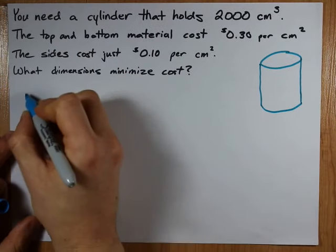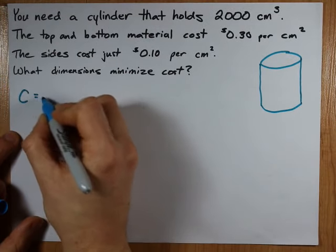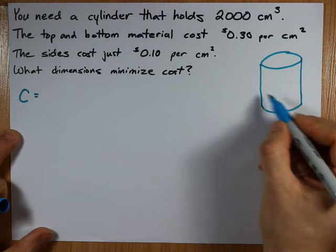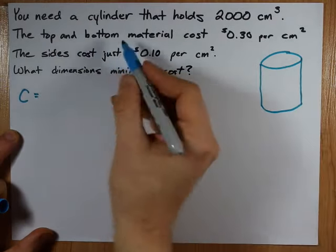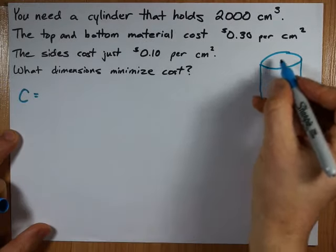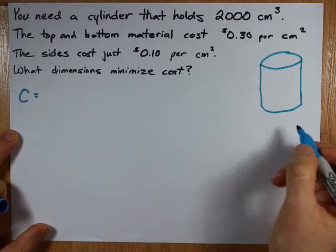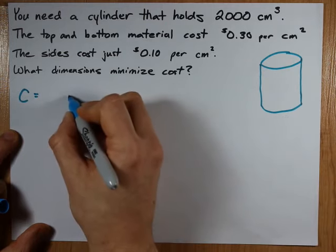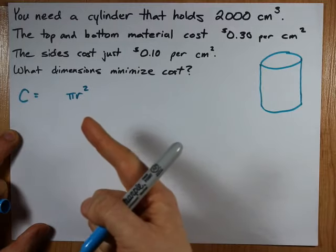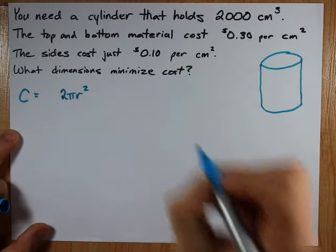Now we want an equation for the total cost. Now the cost here is going to be dependent on the total surface area of the top and bottom, and also separately the sides. The tops and bottoms of a cylinder are circular. They will be pi r squared each, because that's the area of a circle. But there are two of them.